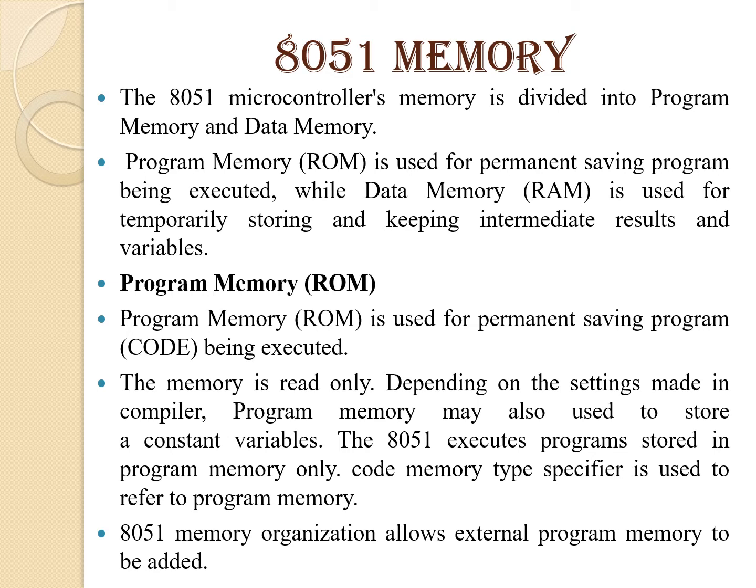Program memory is ROM. It is used for permanent saving of the program code being executed. The memory is read only. Depending on the settings made in the compiler, program memory may also be used to store constant variables. The 8051 executes programs stored in program memory only. The code memory type specifier is used to refer to program memory. 8051 memory organization allows external program memory to be added.